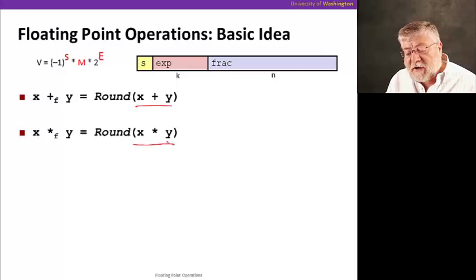In multiplication, we have a different problem. We don't have to worry about aligning the fractions, but we do have to make sure that when we add the exponents, we get an exponent that is still within range. And we could very easily go out of range if we multiply two numbers with large exponents.